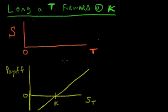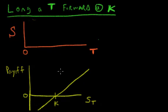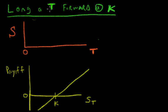We saw in the last video on forward contracts — if you haven't seen it, go watch it — that a forward contract looks like this, where you agree to buy or sell an asset at a time in the future for a specified price. In this case, let's look at a long forward contract: you're long a T forward contract at K.